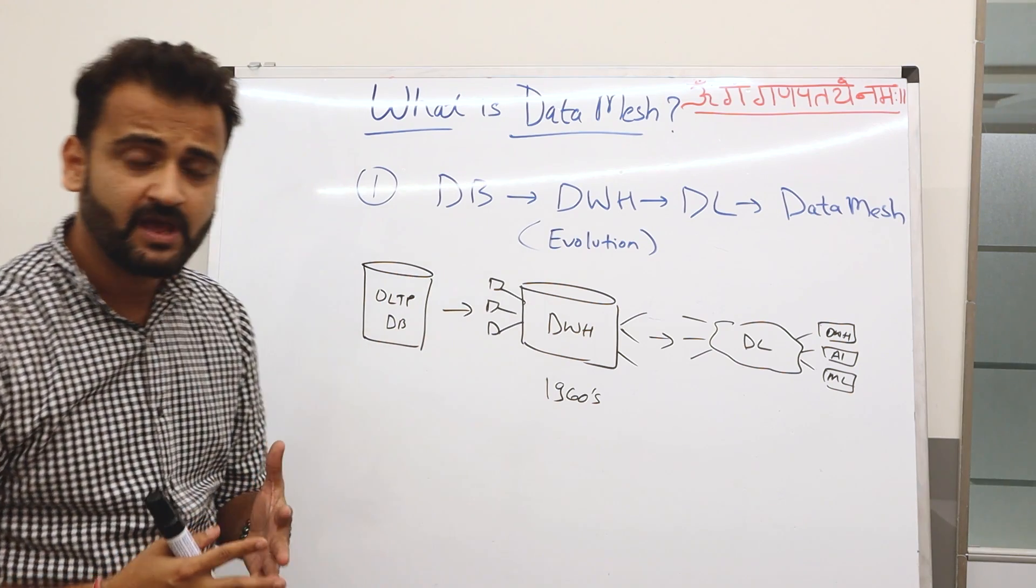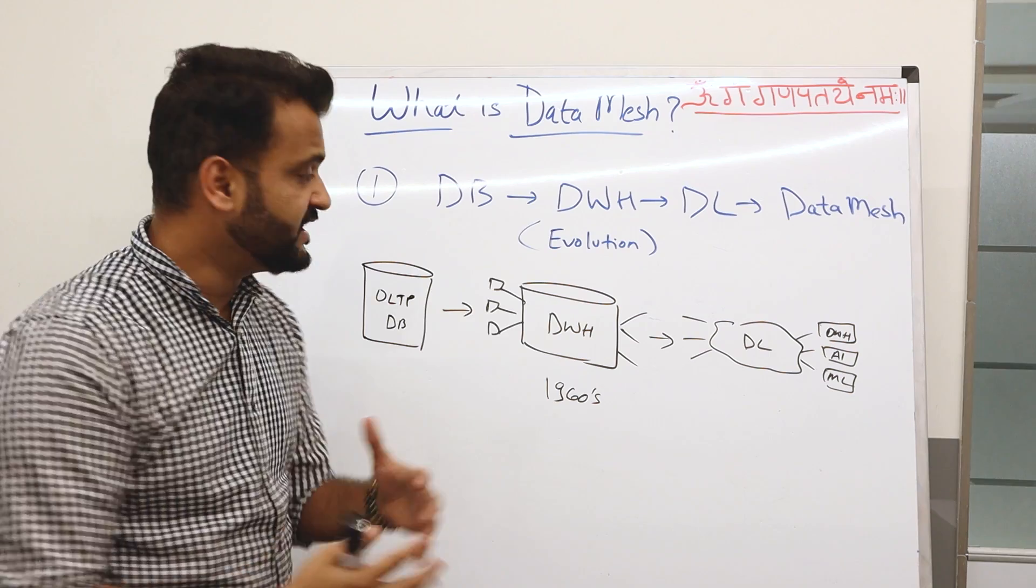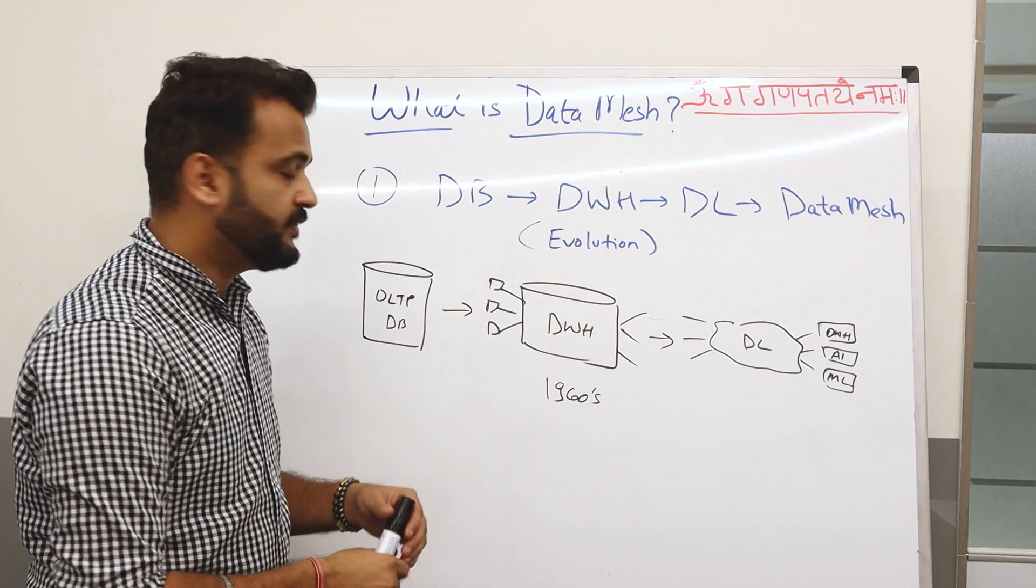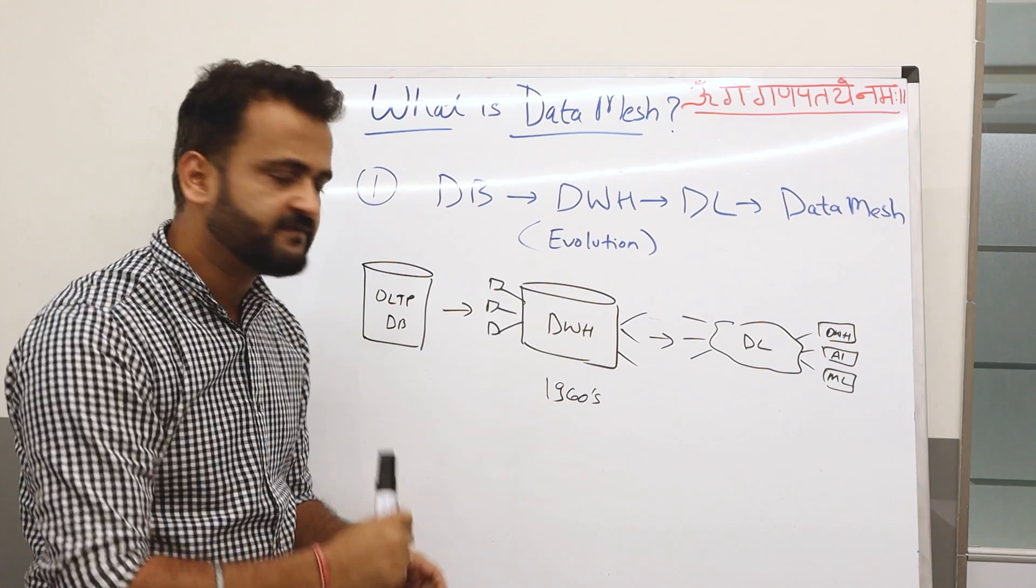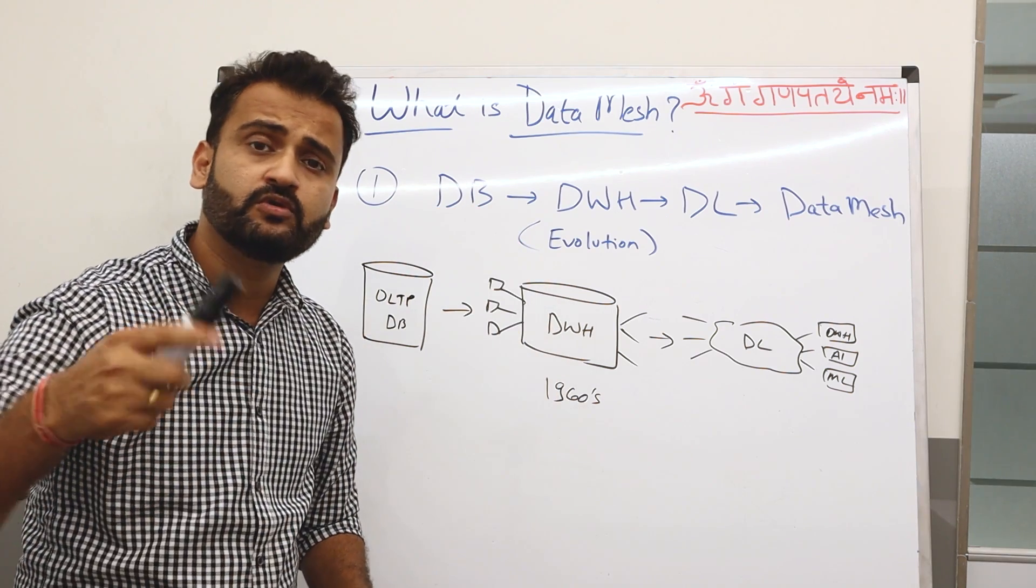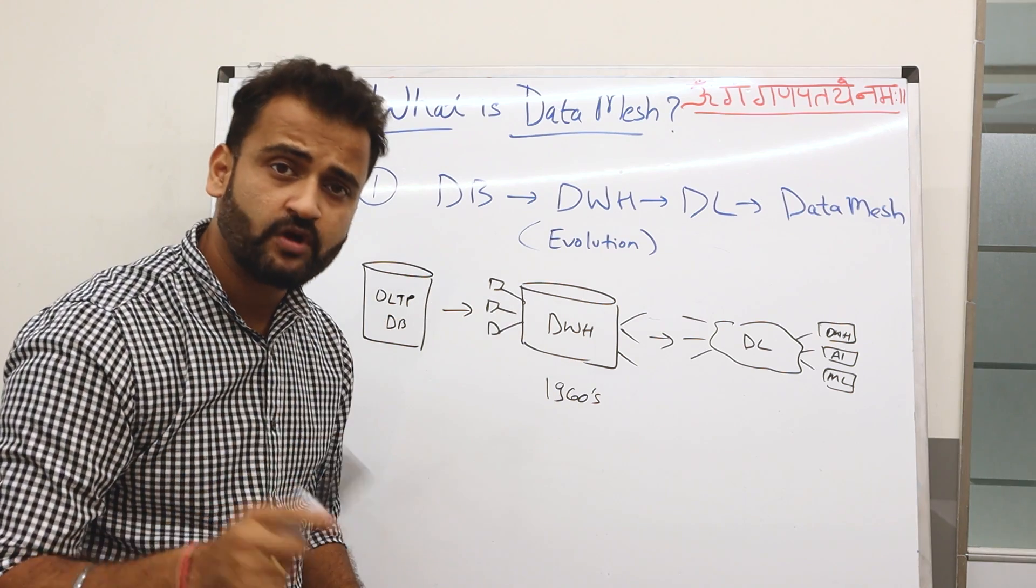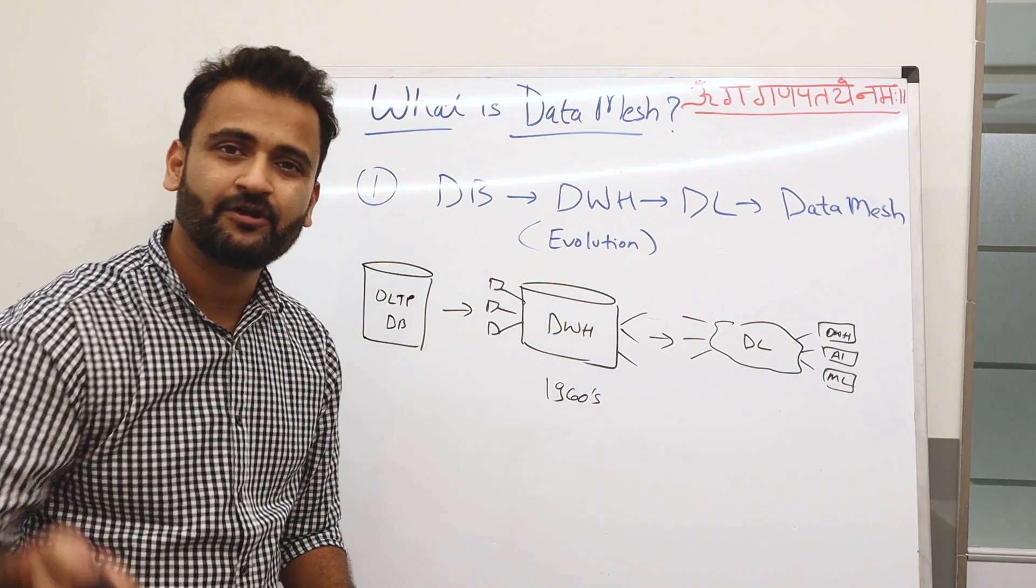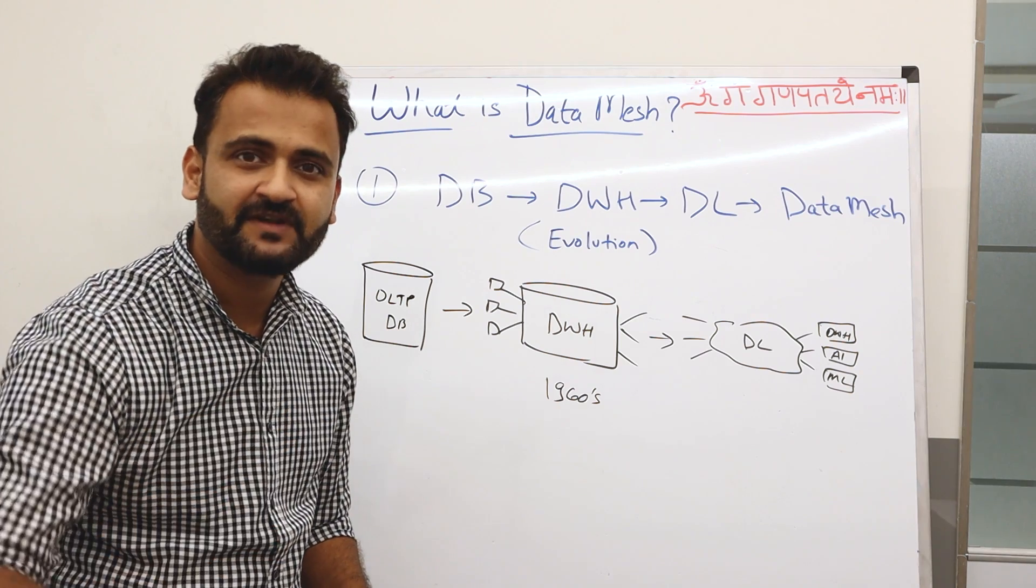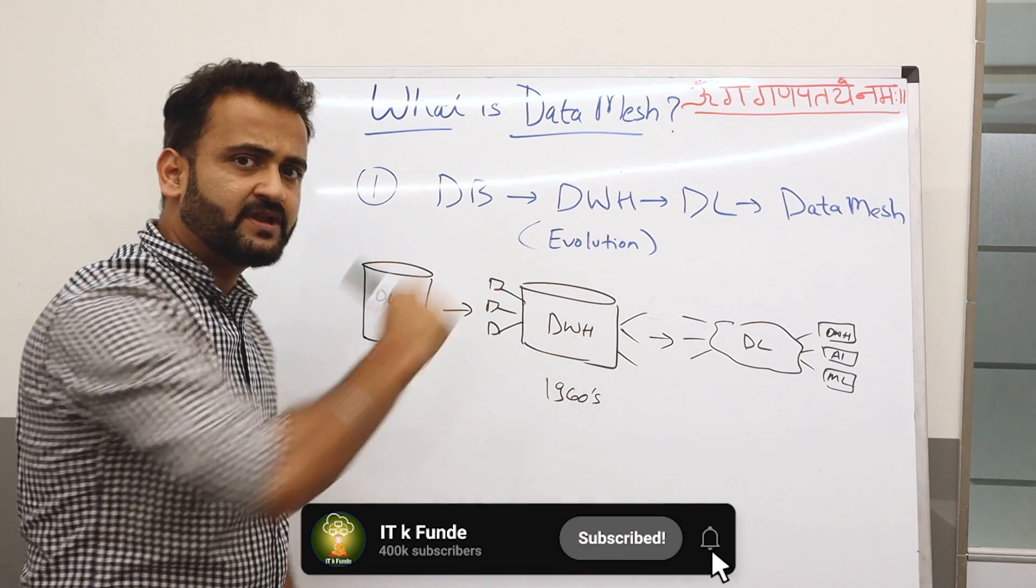But to quickly understand, in the 1960s this whole data warehousing concept came in where we started capturing the data into a centralized location, and we started collecting data from different sources. And then we wanted to do analytics on this data, and that's why we started storing the historical data which was non-volatile and which was not changing with time.